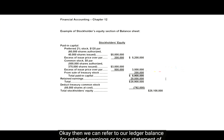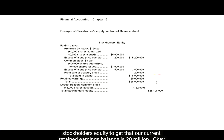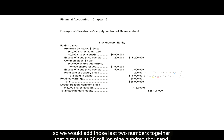Then we can refer to our ledger balance for retained earnings, or to our statement of stockholders' equity, to find that our current retained earnings balance is $20 million. So we would add those last two numbers together, which puts us at $28,900,000.